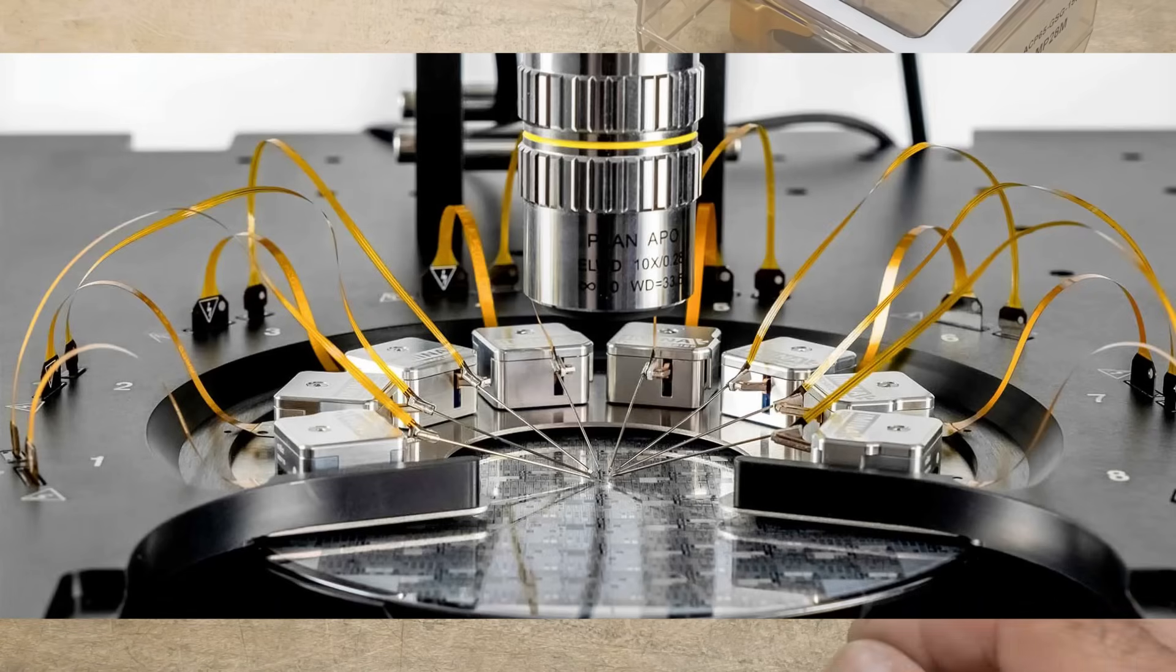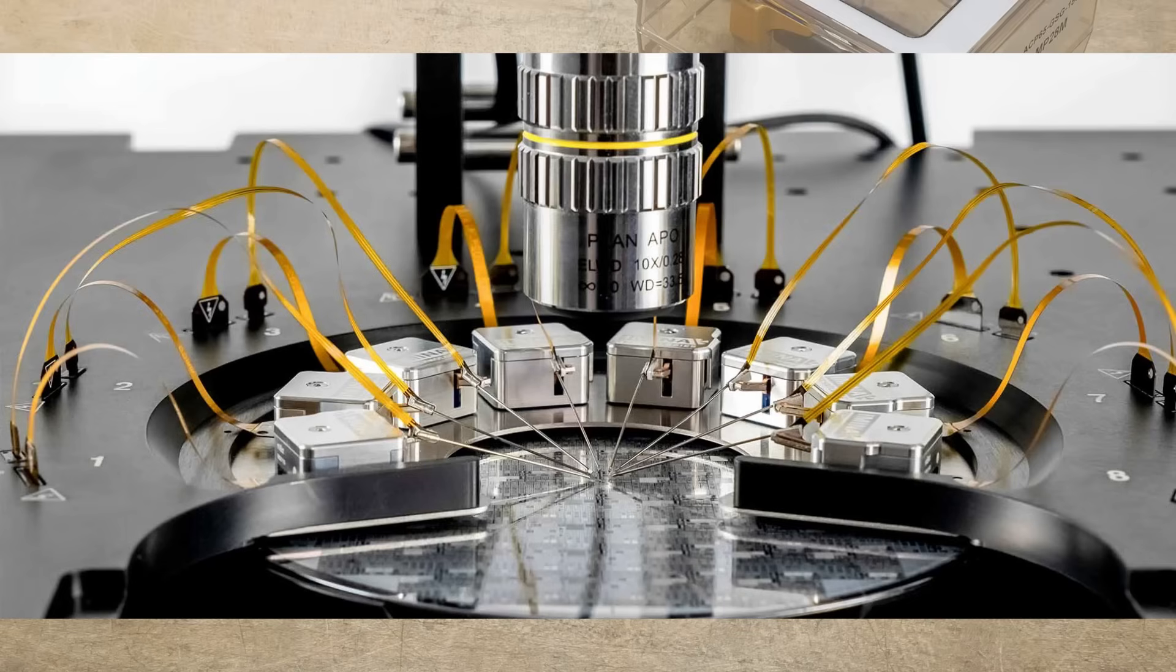Wouldn't it be nice to be able to test wafers without having to saw them out, without having to do all that other stuff? Well, you can. You put it in what's called a probe station, and this probe station allows you to go in and make electrical contact to certain things under a microscope. It's very small stuff, but you can go in and probe things and make measurements.